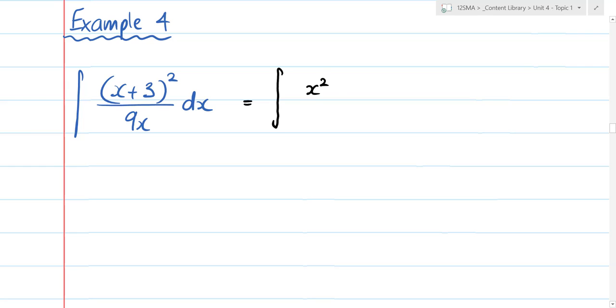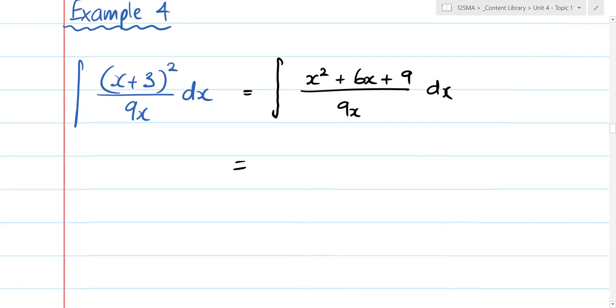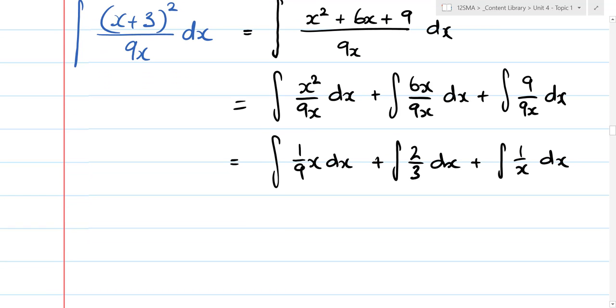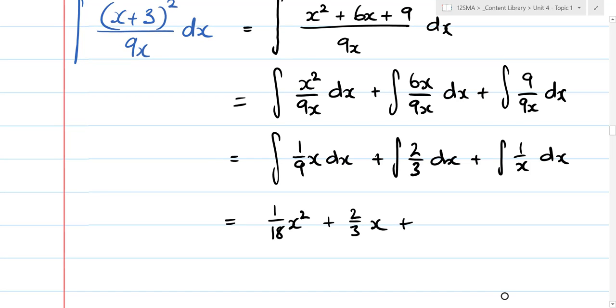Let's expand the top: (x+3)² over 9x dx, which can be written as the integral of x² over 9x dx. I don't have to split it up, but I'll split it up anyway: 6x over 9x dx, plus the integral of 9 over 9x dx. That's equal to the integral of x/9 dx, plus the integral of 2/3 dx, plus the integral of 1 over x dx. So I've really overworked this question, you wouldn't have to show this level of working. And that's equal to 1/18 x², plus 2/3 x, plus log, but now of the modulus of x, plus c.